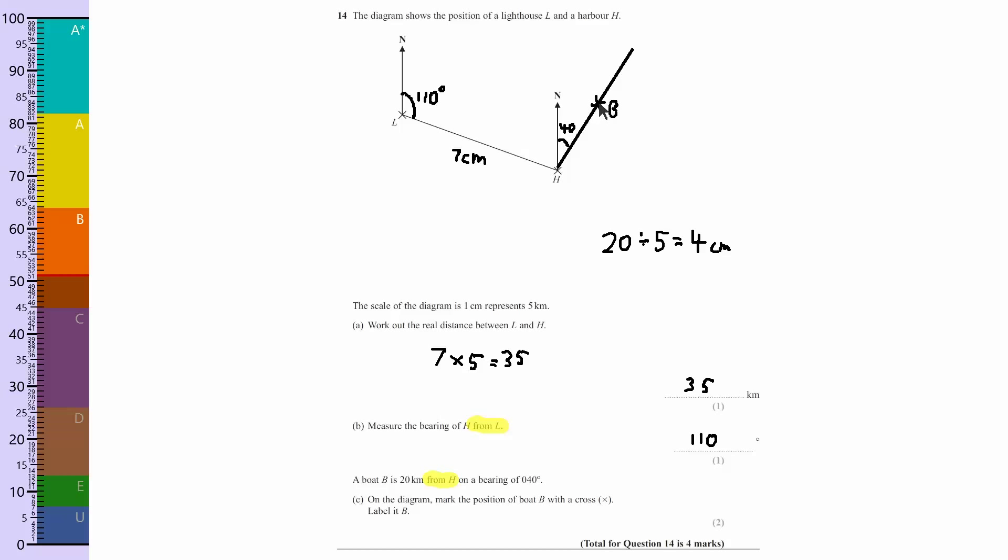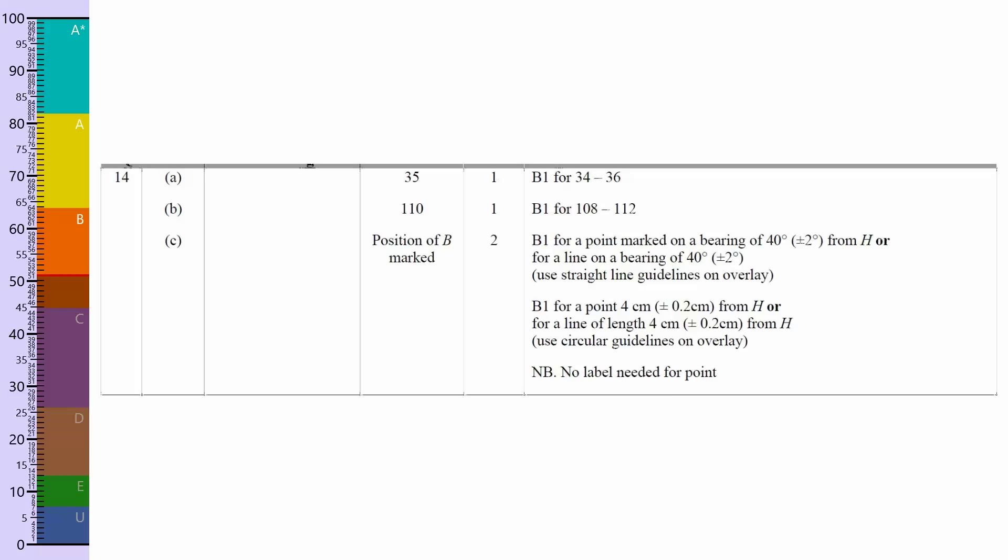Let's have a look at the mark scheme. So it looks like I was absolutely right - 35, so it was seven centimeters. And it says well okay, if they didn't quite get that, that's fine - 34 to 36 was acceptable. For B it's 110 degrees, and again if you were slightly off they'll accept that.